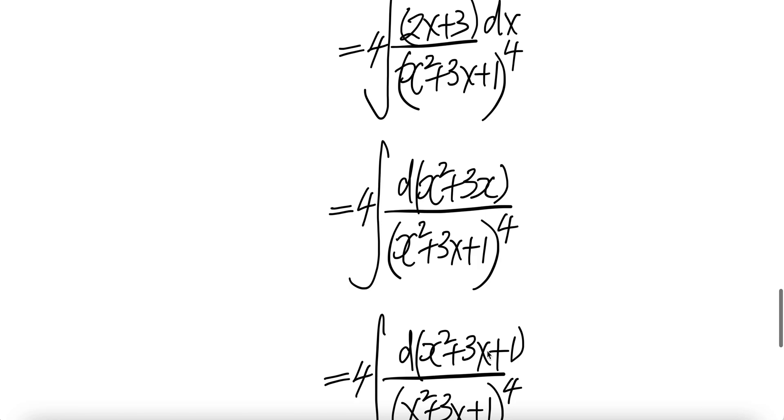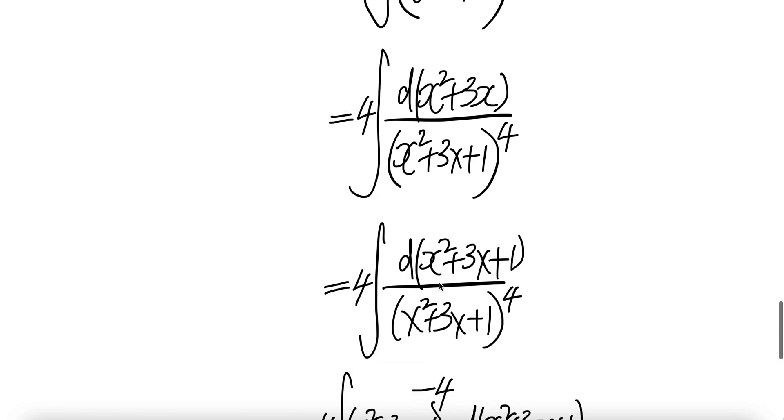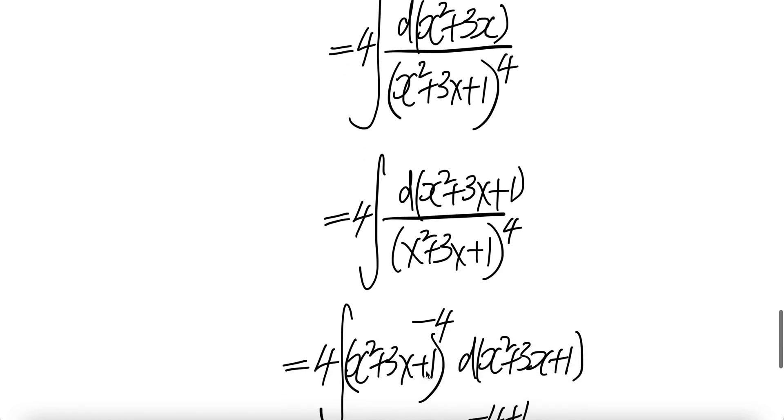Doesn't make any difference because derivative of constant is 0. And then you have this and write this as x squared plus 3x plus 1 to the power of negative 4.